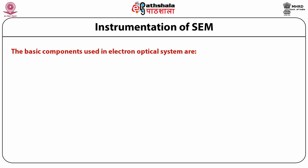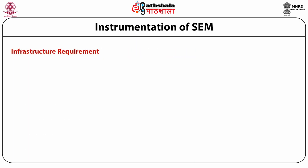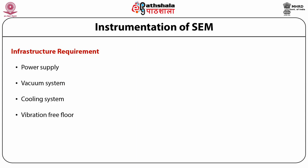The basic components used in the electron optical system are: number one, a source of electrons called the electron gun; number two, lenses; number three, scanning coils; detectors to collect the signals; sample stage; and display or data output devices. The infrastructure requirements are: power supply, vacuum system, cooling system, and vibration-free floor.